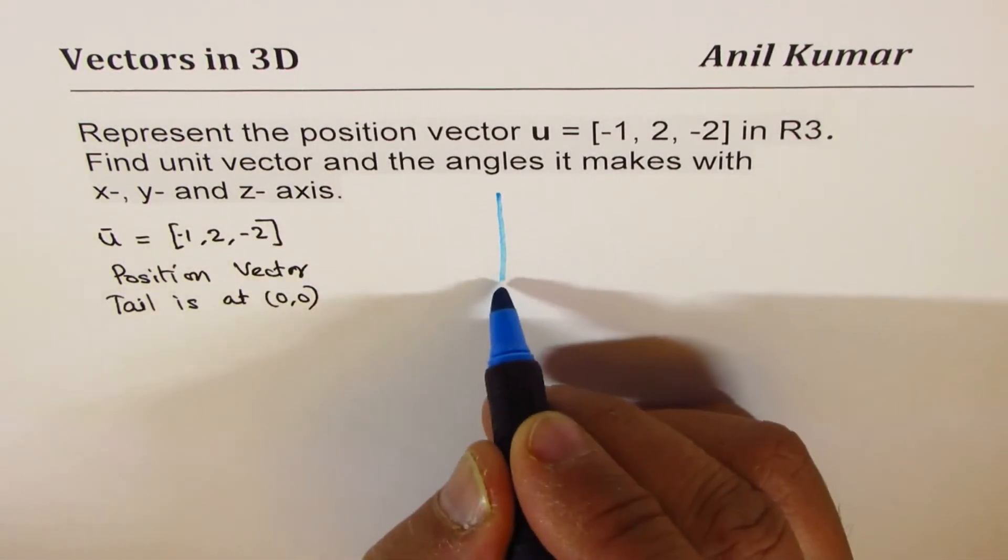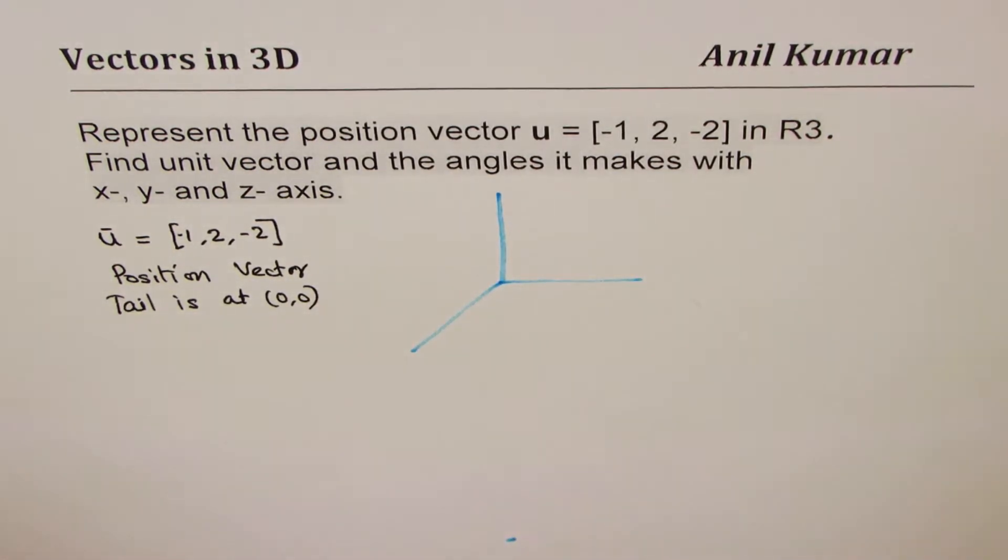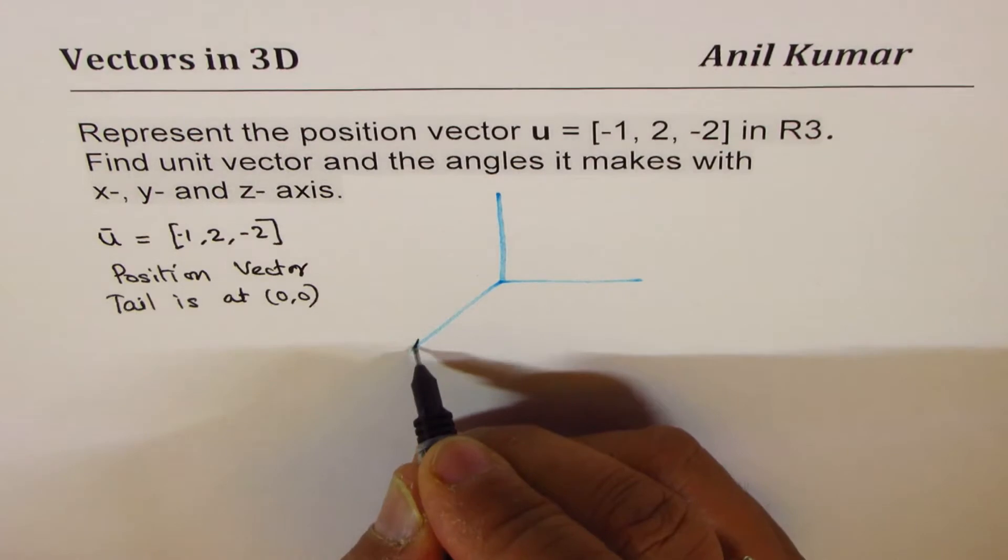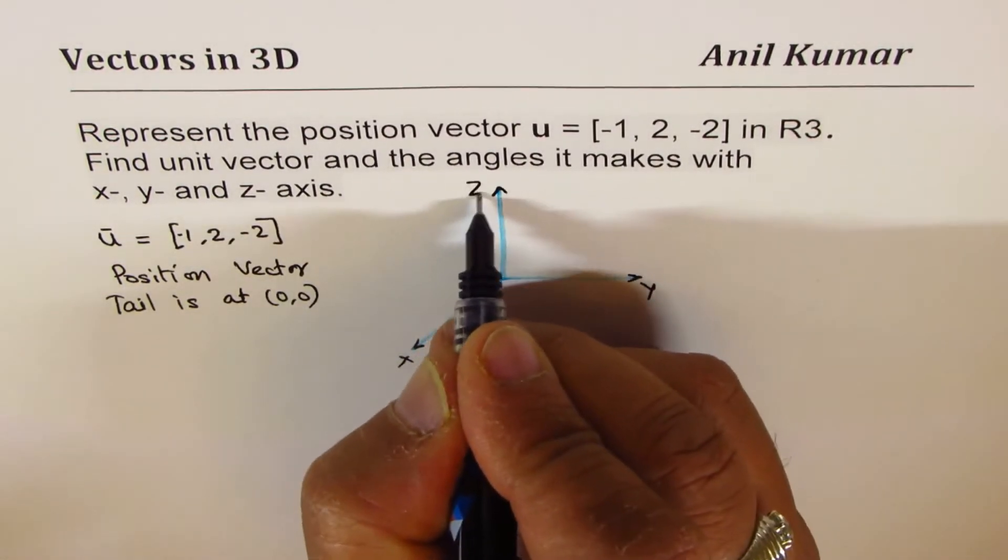So, we'll draw x, y, z axes. This is x positive, y positive direction, z positive direction.